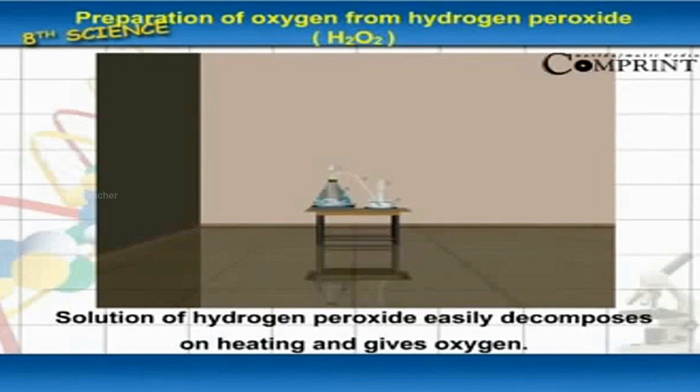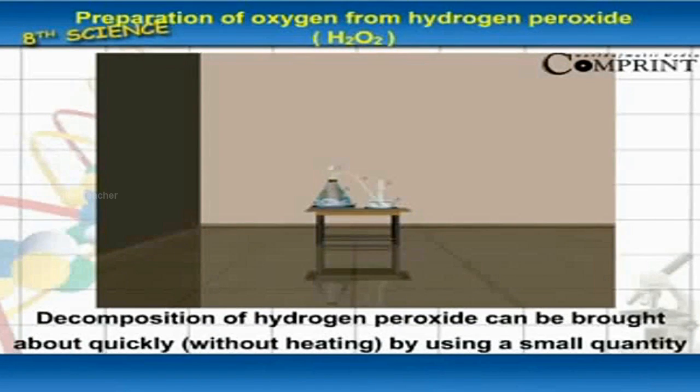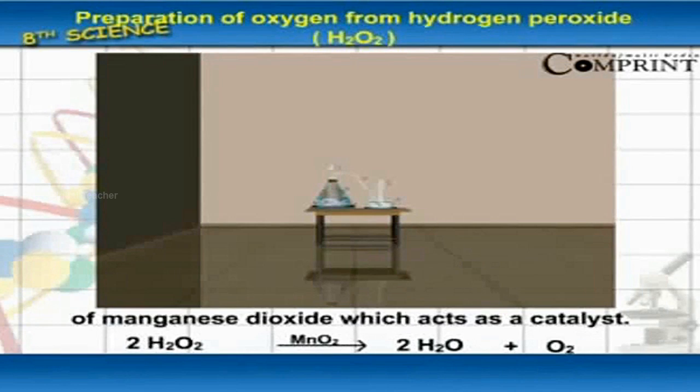Solution of hydrogen peroxide easily decomposes on heating and gives oxygen. Decomposition of hydrogen peroxide can be brought about quickly by using a small quantity of manganese dioxide which acts as a catalyst.